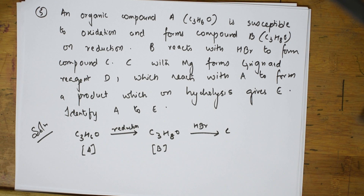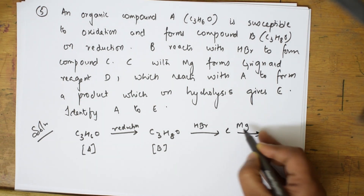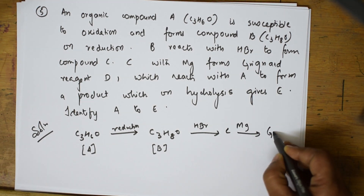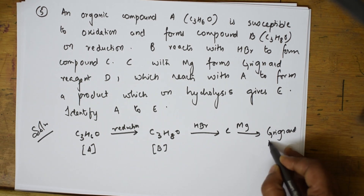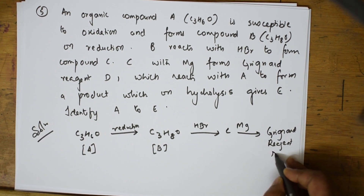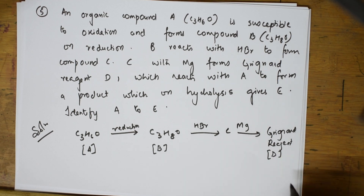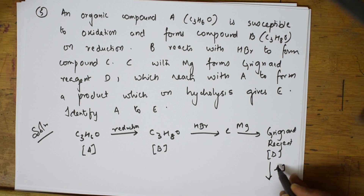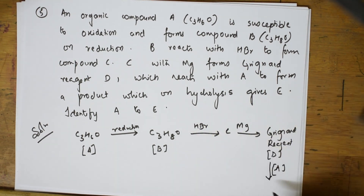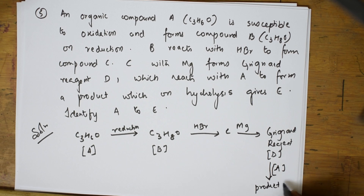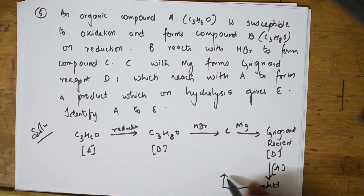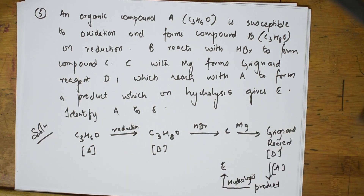Compound C when treated with magnesium forms Grignard's reagent D. Then D when it reacts with A forms a product, and that product when allowed to undergo hydrolysis gives E. This is the summary of the facts. If you write this summary it becomes easy. Now let's see where we can find the clue.